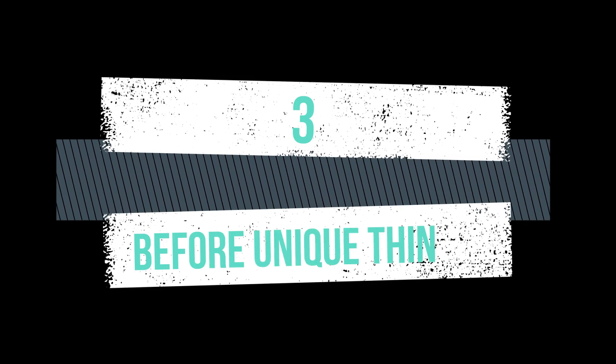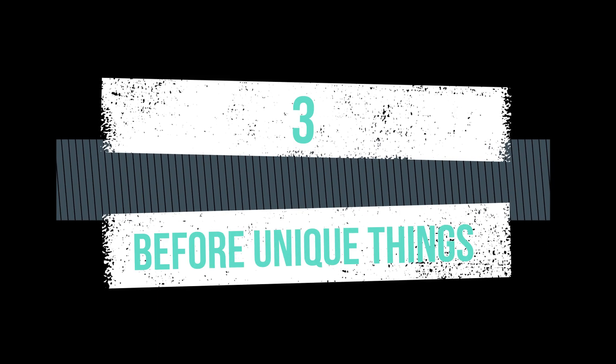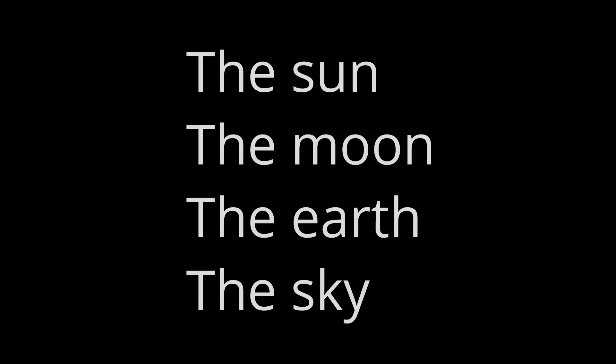The third point is: 'the' is used before the names of unique things — things that are unique of their kind. Examples: the Sun, the Moon, the Earth, the Sky, etc.